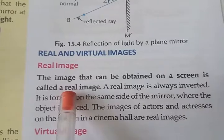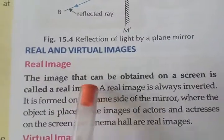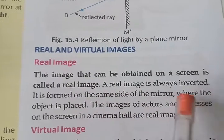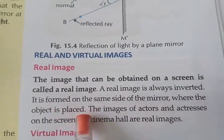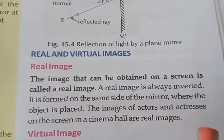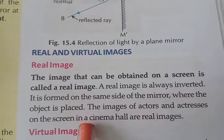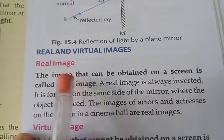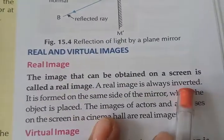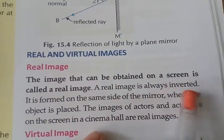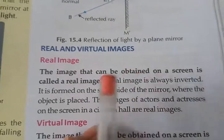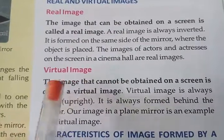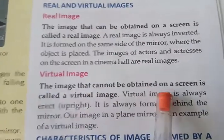The image we get is on the same side as the mirror. The image of actors and actresses on a screen in a cinema hall are real images. So to summarize: the image that can be obtained on a screen is a real image, it is inverted, and it is found on the same side as the mirror. Next is virtual image.